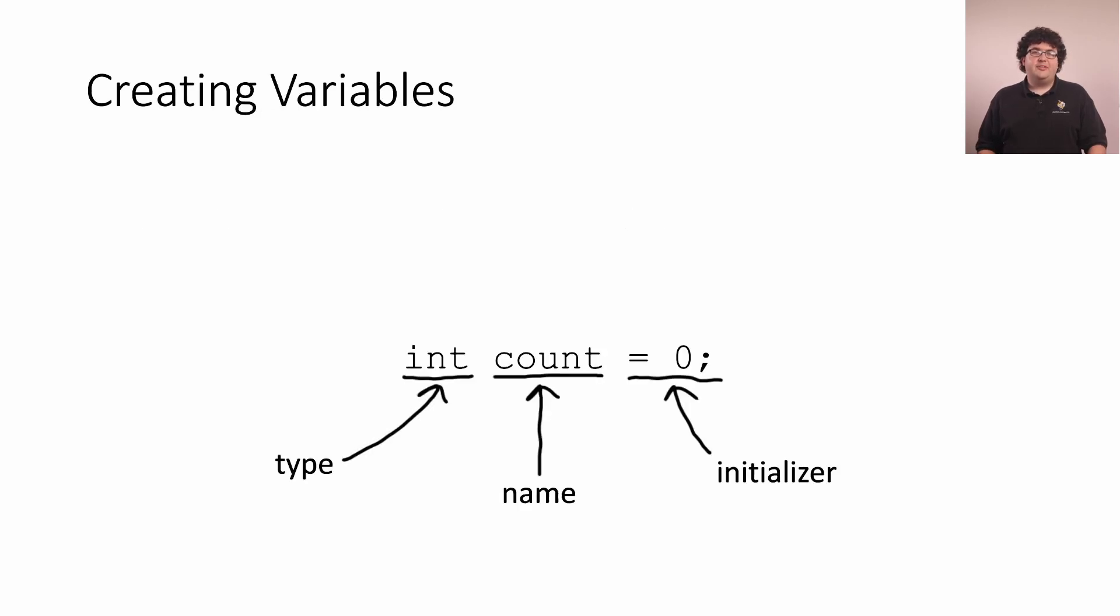Now creating a new variable involves answering three questions. What type of data will our variable hold? What will our variable's name be? And what value should it start with? We tell our computer all of that through a variable declaration statement, like this one.